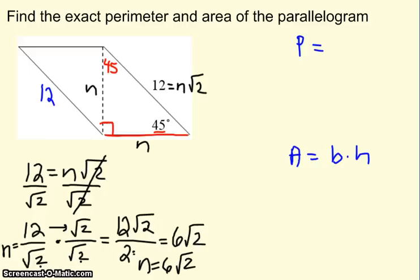So I just found a really valuable piece of information: n equals 6 root 2. So let's plug that into our picture. This bottom side became 6 root 2, and my imaginary line, the height of my shape, also became 6 root 2.